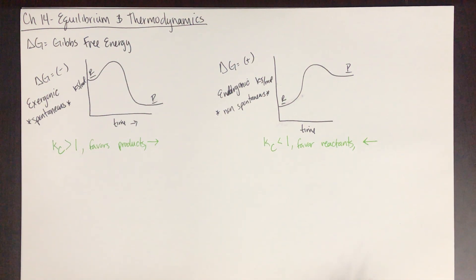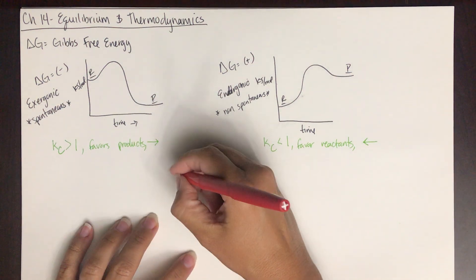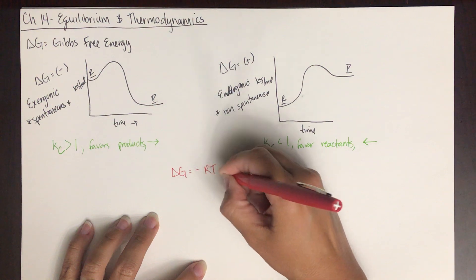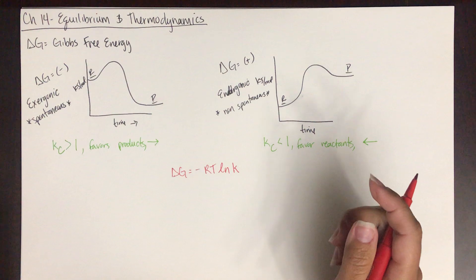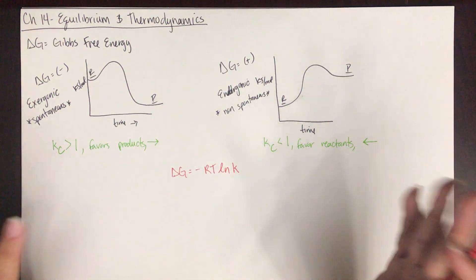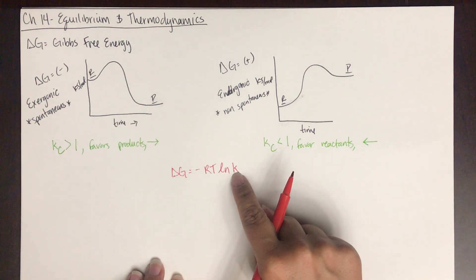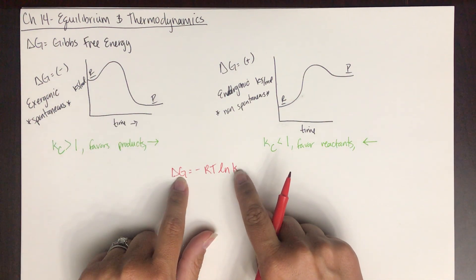The way Gibbs free energy, equilibrium, and thermodynamics are related is through this equation: delta G equals negative RT ln K. This K can be any equilibrium constant we've discussed — KC, KP, KA, and so on. This allows us to calculate K if we know delta G, or calculate delta G if we know K.